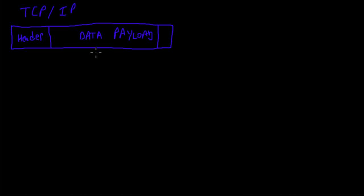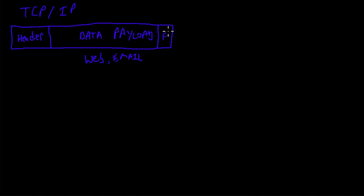The data payload would actually contain stuff like your web traffic, your actual email contents, that type of stuff. Then you've got the last part, which is your footer. The footer will have some type of checksum information, so if the packet gets garbled the routers will know to drop it and ask for the packet again.